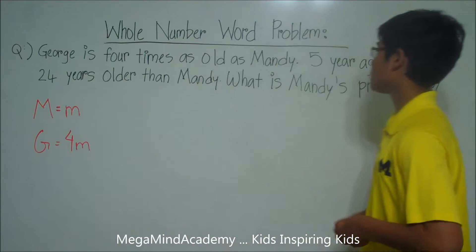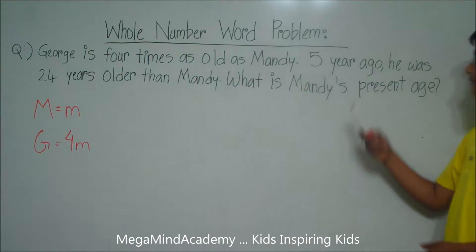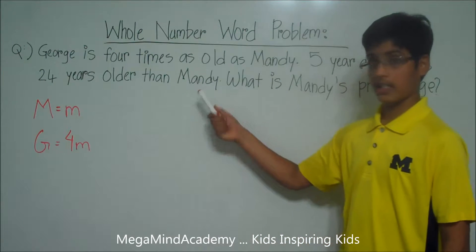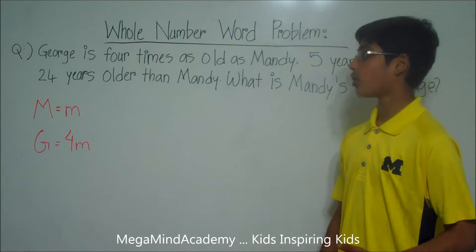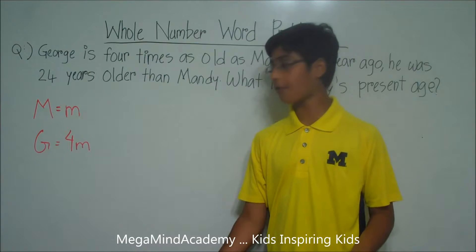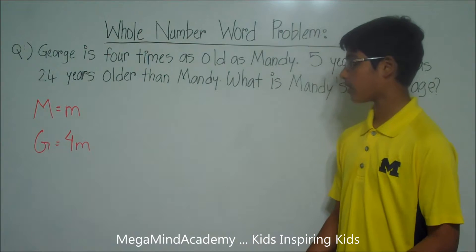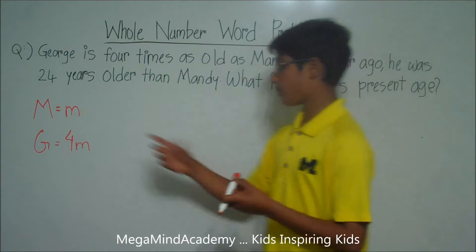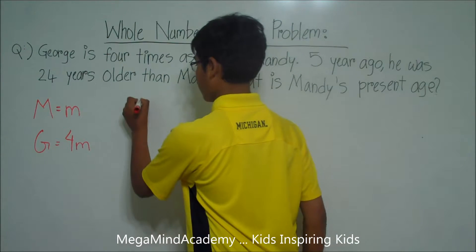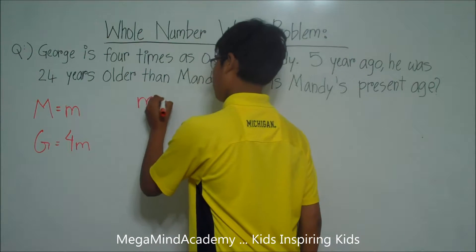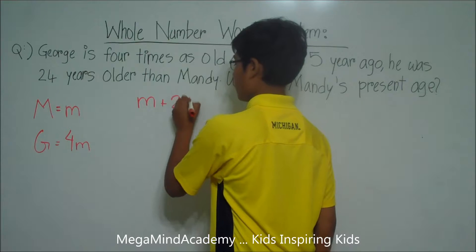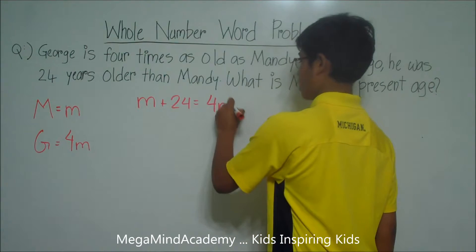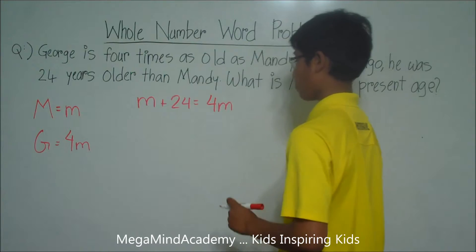The problem also states that five years ago, he was 24 years older than Mandy. So this means that George is still 24 years older than Mandy. So M plus 24 is equal to 4M, which is George's present age.